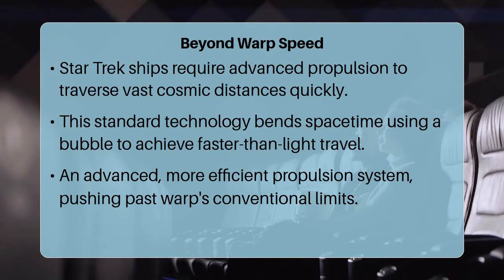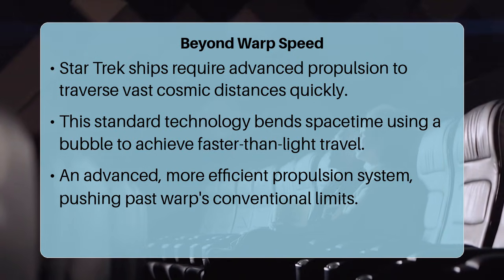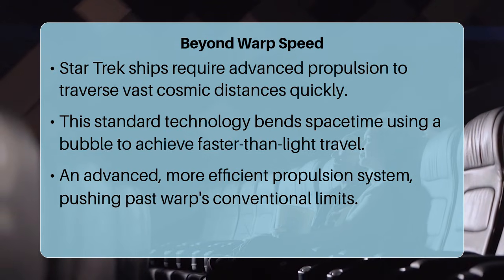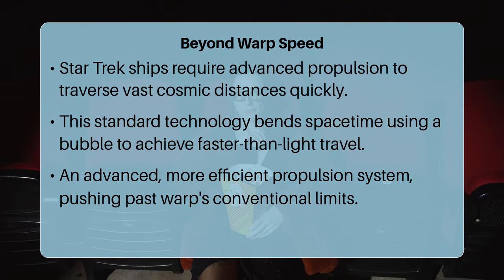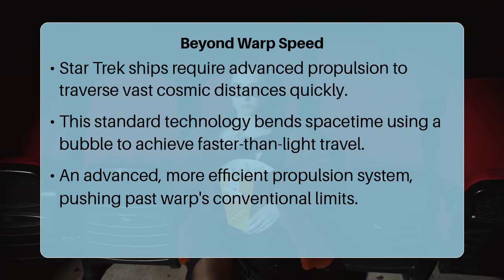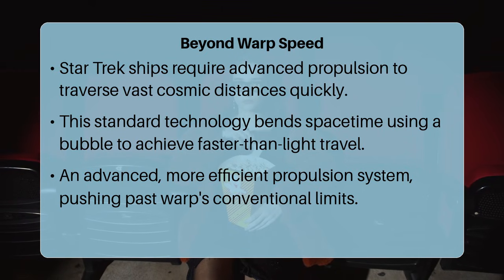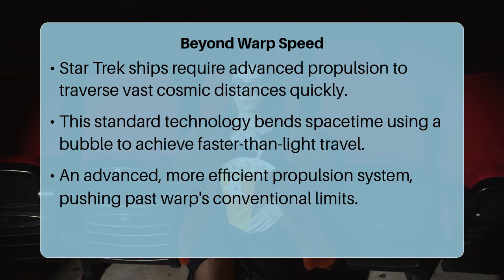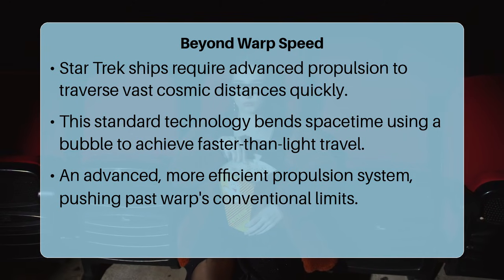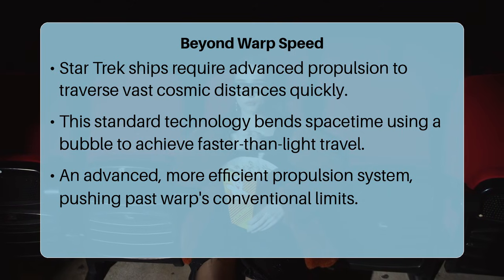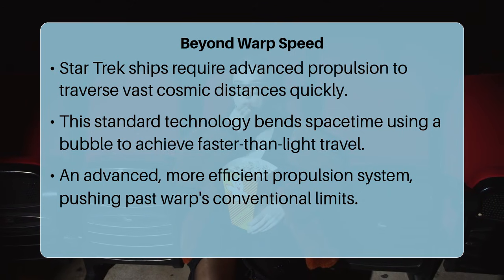At its core, the difference between warp and transwarp comes down to speed and efficiency in faster-than-light travel. Warp drive is the standard method used by most starfaring civilizations, enabling vessels to exceed the speed of light by bending spacetime. Transwarp, however, represents a significantly more advanced and often faster form of propulsion, pushing beyond the limits of traditional warp technology to achieve unprecedented velocities and travel efficiencies.